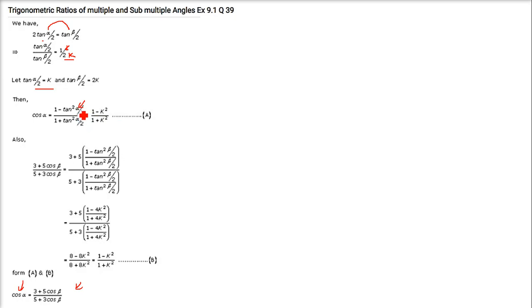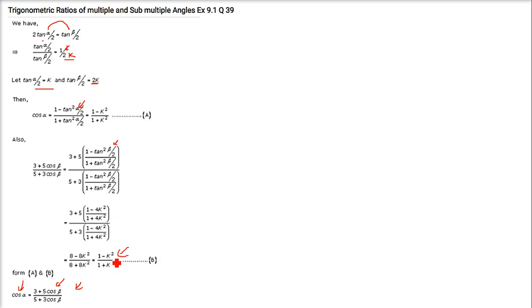For the right-hand side, express cos β as (1 − tan²(β/2)) / (1 + tan²(β/2)), then substitute tan(β/2) = 2k. Plug this into (3 + 5cosβ) / (5 + cosβ) and simplify. You get (1 − k²) / (1 + k²), which matches cos α. So the two sides are equal.